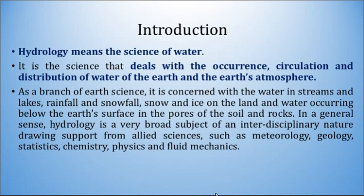What is the meaning of hydrology? Hydrology means the science of water. It is the science that deals with the occurrence, circulation and distribution of water of the earth and the earth's atmosphere. As a branch of earth science, it is concerned with the water in streams and lakes, rainfall and snowfall, snow and ice on the land, and water occurring below the earth's surface in the pores of the soil and rocks. In a general sense, hydrology is a very broad subject of an interdisciplinary nature drawing support from allied sciences such as meteorology, geology, statistics, chemistry, physics and fluid mechanics.